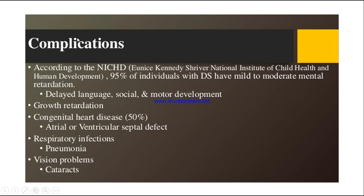Coming to the complications: 95% of individuals born with Down syndrome will have mild to moderate mental retardation, including delayed language, social development, and motor development. There will also be growth retardation due to reduced growth hormones. Congenital heart disease occurs in 50% of cases, involving atrial or ventricular septal defects. Respiratory infections like pneumonia and vision problems like cataract are also common.